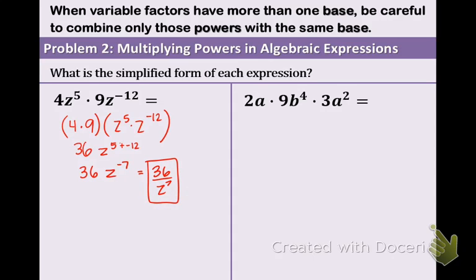So one way that you know you're done simplifying is that you look for zero exponents or negative exponents or any like terms. And when those are all condensed and fixed, then you know that you're done.